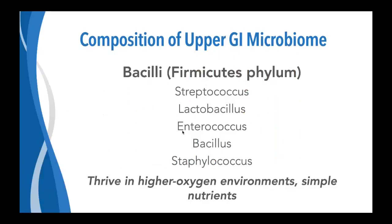In terms of composition, the Bacilli class — a major group within the Firmicutes phylum — tends to be pretty dominant in the upper GI microbiome across different studies. This includes organisms like Streptococcus, Lactobacillus, Enterococcus, Bacillus, and Staphylococcus, many of which are often included in various GI tests. The key thing is that they all tend to thrive in higher oxygen environments as well as simple nutrients, which are the conditions that prevail particularly in the upper small intestine.